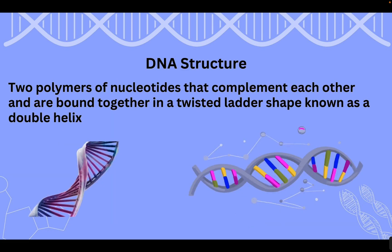DNA's structure is pretty universally recognized — we've seen this image lots of times: that twisted ladder shape. It's a double-stranded molecule with two polymers of nucleotides, meaning a chain of repeated subunits called nucleotides. These two strands complement each other, have a binding pattern, and come together in that twisted ladder shape, better known as a double helix. We're going to zoom in and break down these subunits.